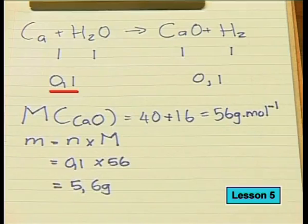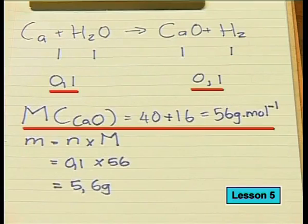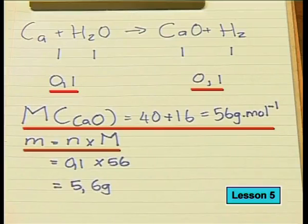Let's check our answers. For the calculation if the product is calcium oxide: we started the reaction with 0.1 moles of calcium. From the balanced chemical equation we can predict that 0.1 moles of calcium oxide would form. The molar mass of calcium oxide is 56 g/mol. Using the equation m = n × M and substituting in the values, the theoretical mass is 5.6 grams.